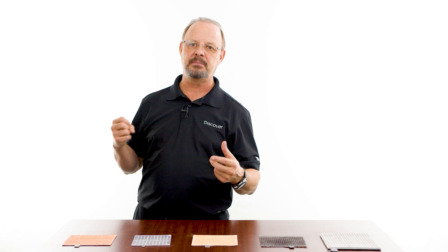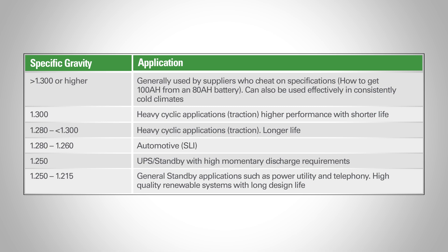However, high specific gravity can also be used effectively in consistently cold climates. For a mission-critical battery bank in the high Arctic or Antarctica, the colder temperatures mean you want to raise the operating temperature of the battery, so higher specific gravity can be used. When adjusted for temperature, the actual battery voltage will be reduced because of the cold.